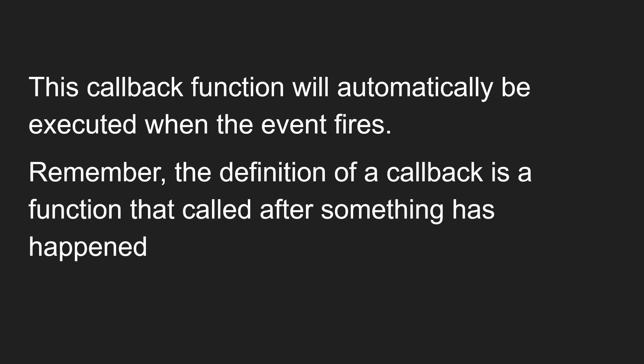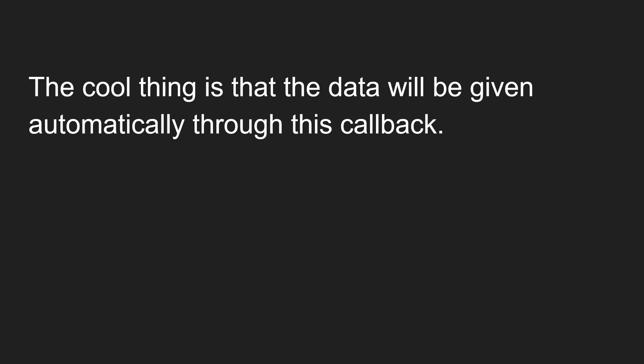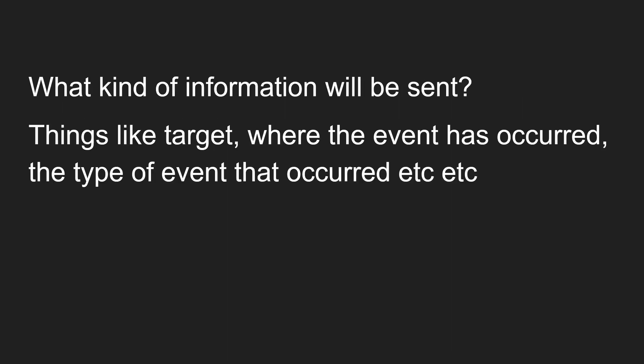Remember the definition: a callback function is a function that is called after something has happened. The cool thing is that data will be given automatically through this callback. When the callback function is called automatically, the event handler will pass the data automatically. The kind of information sent includes things like target — where the event occurred — and the type of event that occurred, as we discussed in the previous video.